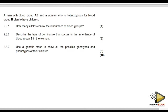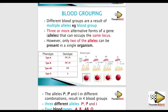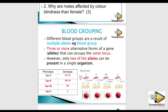A man with blood group AB and a lady with blood group B plan to have children. How many alleles control blood groups? You see this booklet for the distinction material. Different blood groups result from multiple alleles. For blood group, there are three alleles — allele for A, allele for B, and allele for O — and they are at the same locus. However, only two alleles can be present in a single organism.